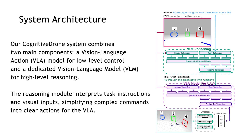The Cognitive Drone system is built around a dual-model architecture designed to handle both low-level flight control and high-level cognitive reasoning. At its core, the system features a visual language action model responsible for interpreting visual data and textual instructions to generate real-time flight commands.